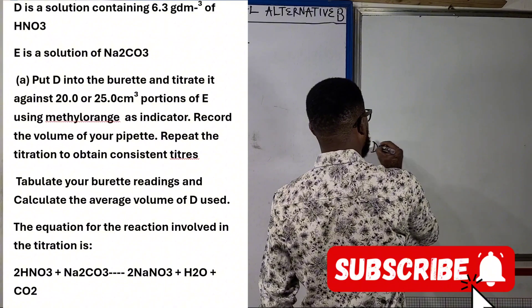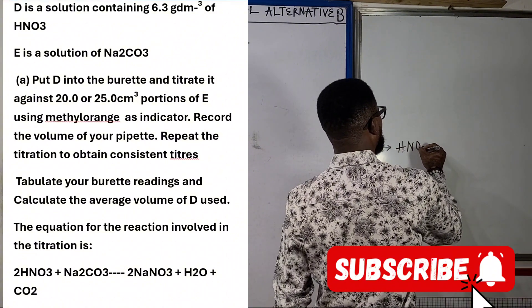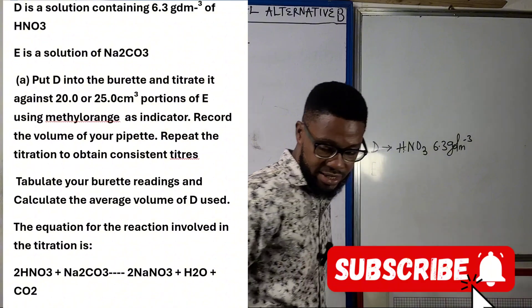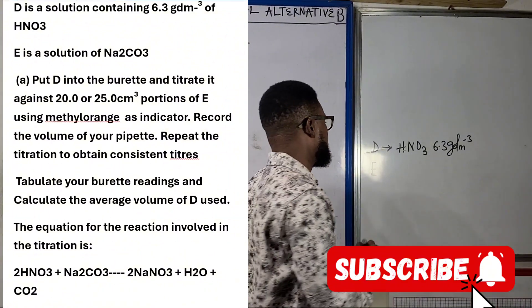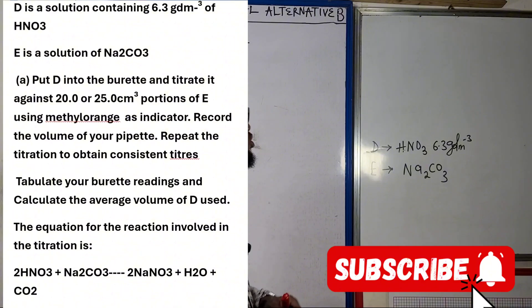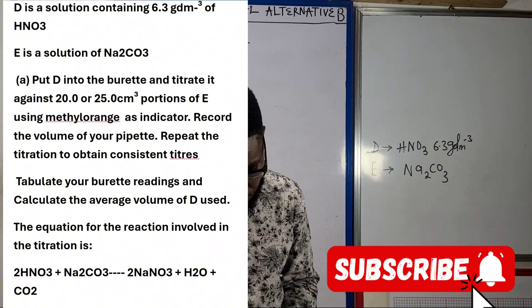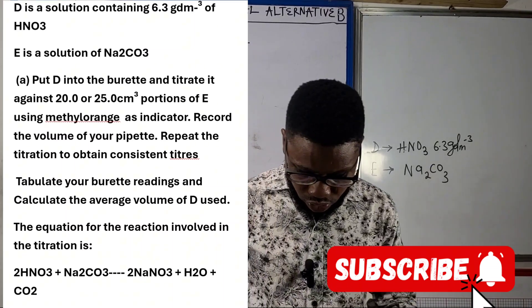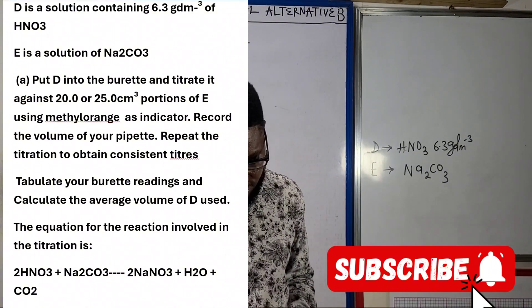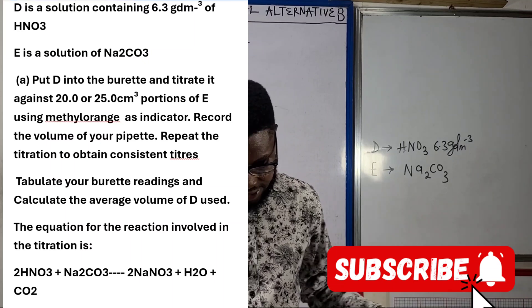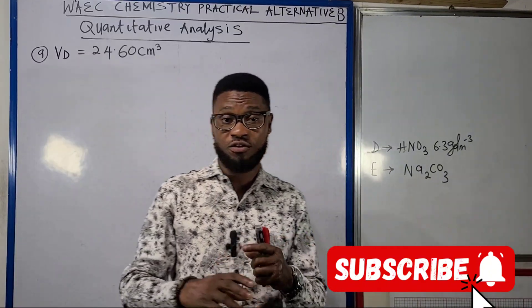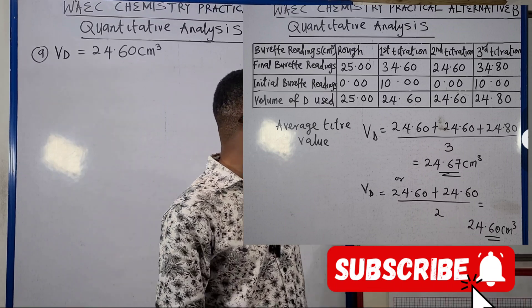So D here is actually HNO3 and the concentration is 6.3 grams per dm³ — that's the mass concentration. E is a solution of sodium trioxocarbonate(IV), and we were told no mass concentration, no molar concentration given for E. We're told to put D into the burette and titrate it against 20 or 25 cm³ portions of E using methyl orange as indicator, record the volume, repeat the titration to obtain consistent titers, tabulate your burette readings and calculate the average volume of D used.